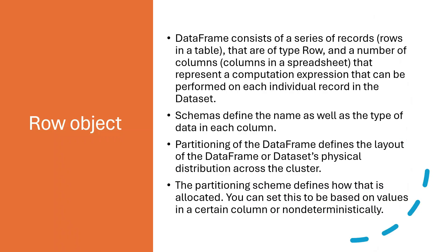Let's talk about some fundamentals essential to understanding DataFrames and Datasets. First, the most fundamental thing is the Row object. We can imagine a DataFrame or Dataset as a relational table with rows - consider each row present as a Row object. It's a series of records or rows in a table, and the type of that row is Row. A Row object has a number of columns, and each row represents a type Row.